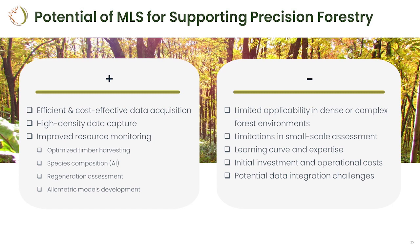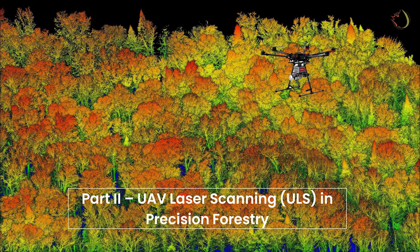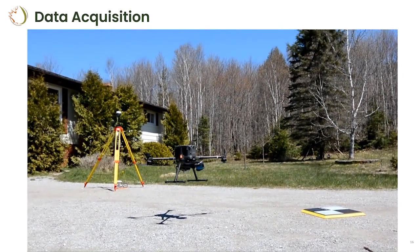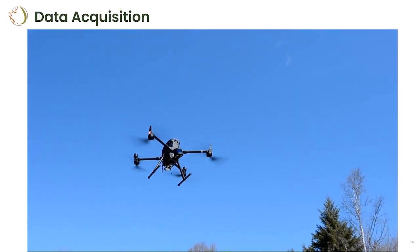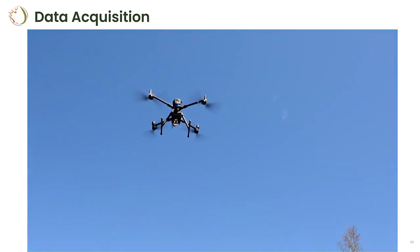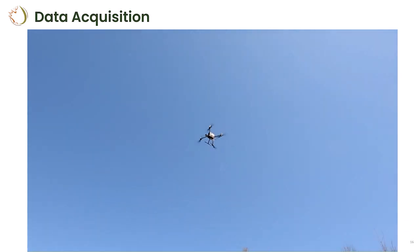That concludes the mobile laser scanning section. Now a shorter section on UAV-based LiDAR. We've done a lot of testing with UAV laser technology in both hardwood and softwood environments. For softwood I'll show a case study in a plantation, and two smaller ones in hardwood stands. This time the data acquisition is from above the canopy, and depending on the laser technology used, you get very different types of point clouds. We used a DJI M300 RTK with a LiAir V70 sensor.